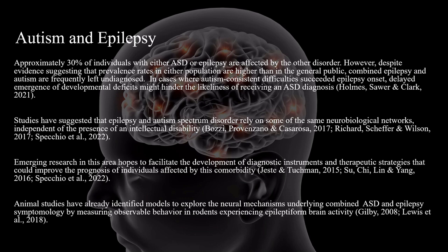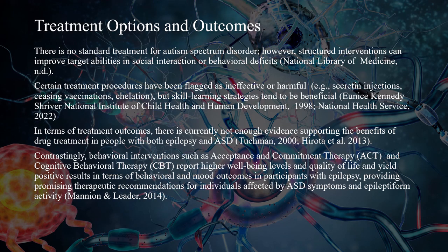Emerging research hopes to facilitate the development of diagnostic instruments and therapeutic strategies that could improve the prognosis of individuals affected by this comorbidity. Animal studies have already identified models to explore the neuromechanisms underlying combined Autism Spectrum Disorder and epilepsy symptomology by measuring observable behavior in rodents experiencing epileptiform brain activity. There is no standard treatment for Autism Spectrum Disorder.